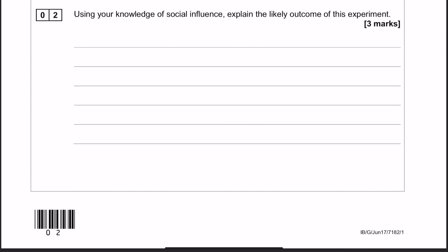Okay, so this is question number two, and here we are asked to use our knowledge of social influence to explain what is likely to happen in the experiment.